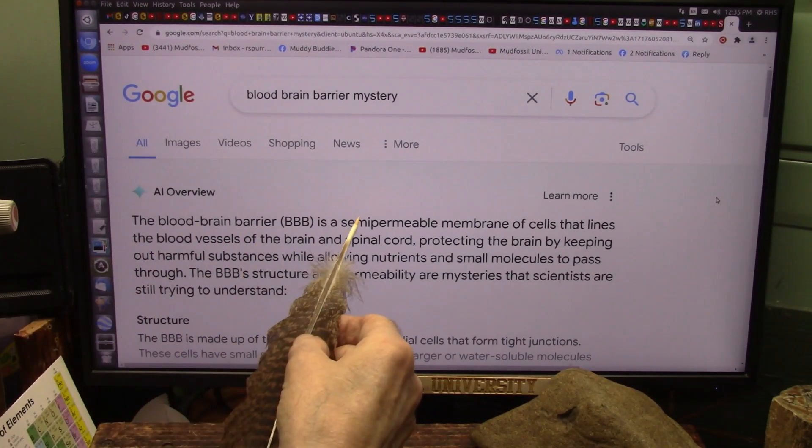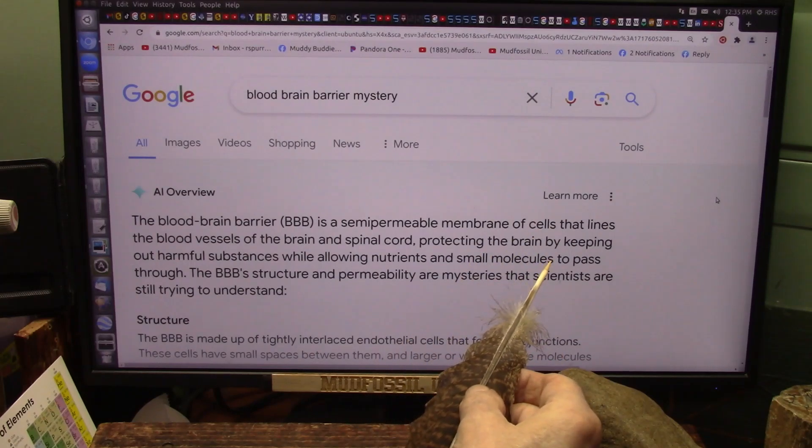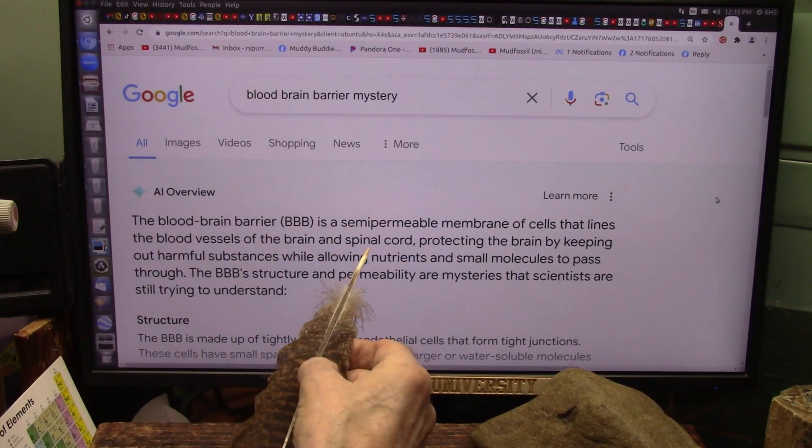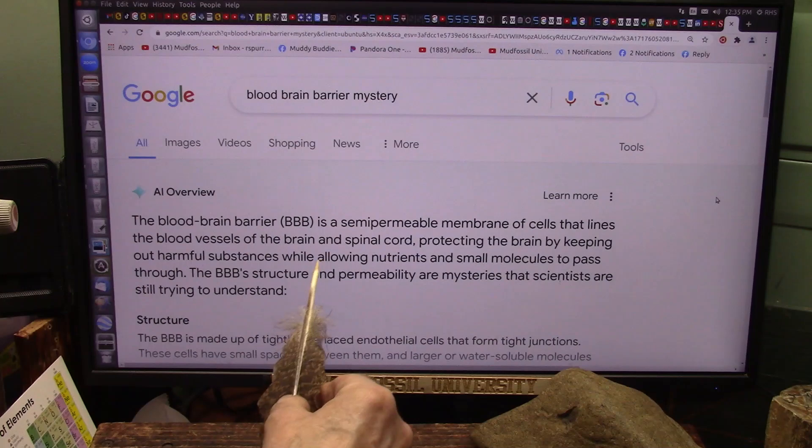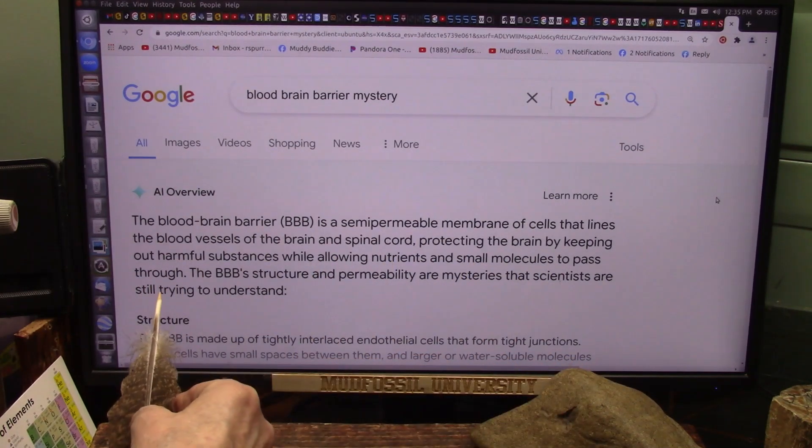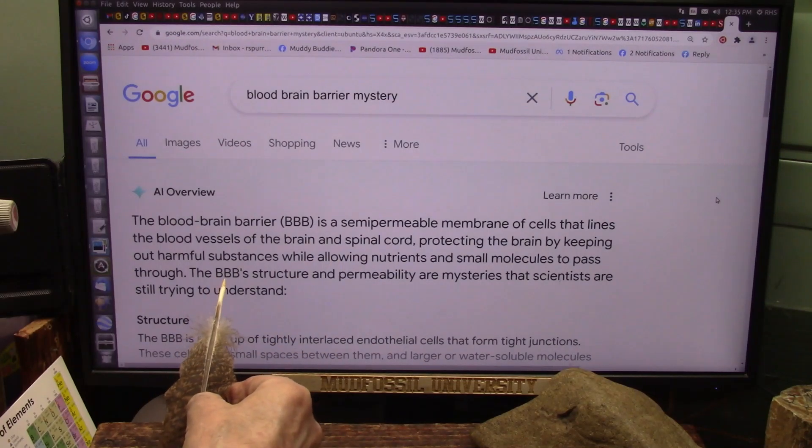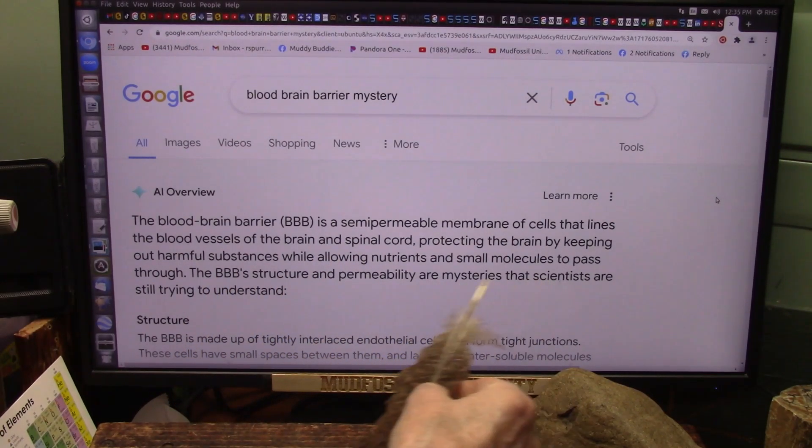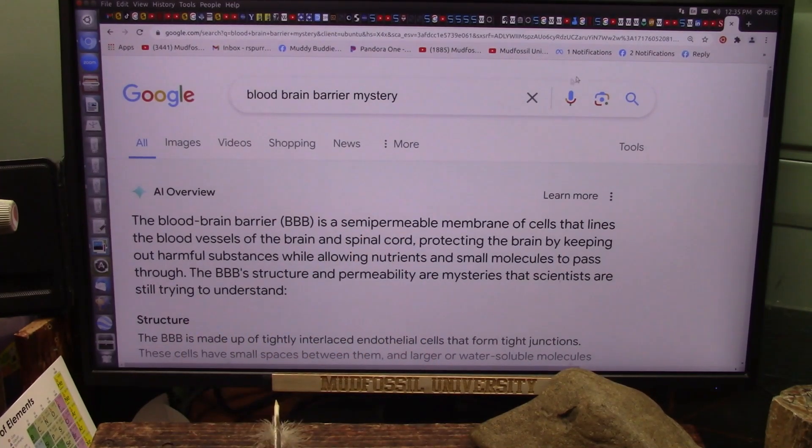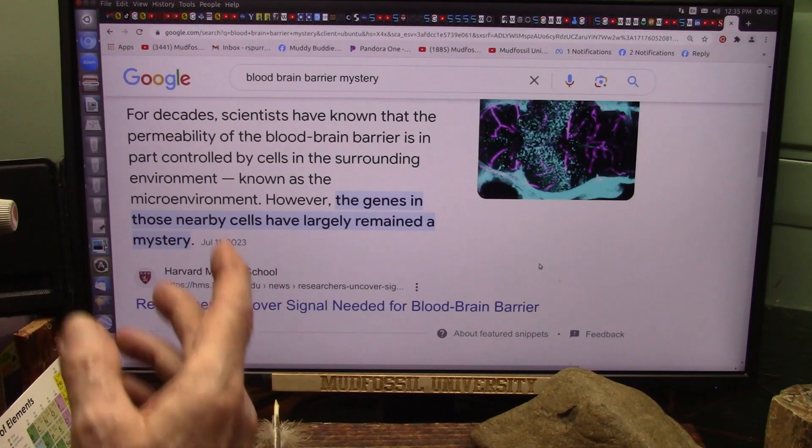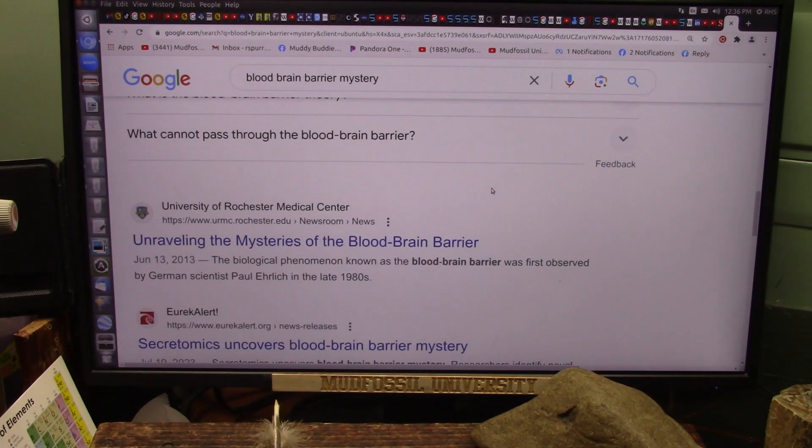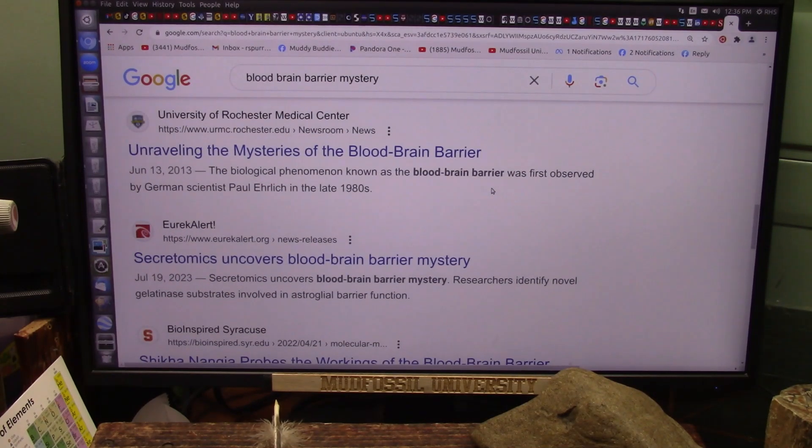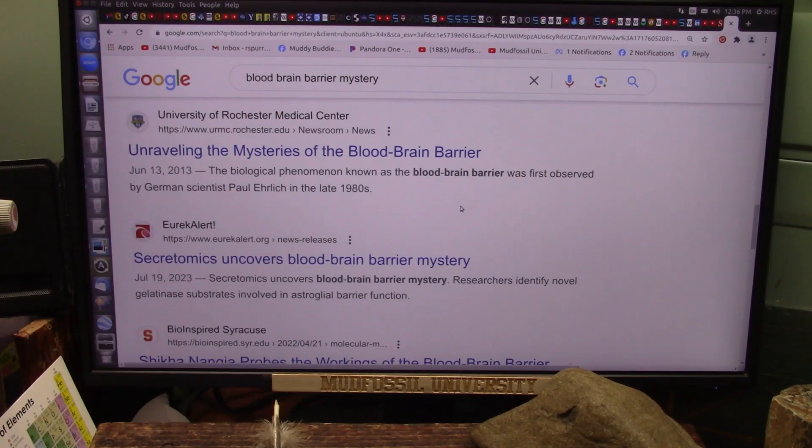This is very simple. The blood-brain barrier is a semi-permeable membrane of cells that lines the blood vessels of the brain and spinal cord, protecting the brain by keeping out harmful substances, only allowing little tiny things in. It allows nutrients and small molecules to pass through, but not enzymes. The blood-brain barrier structure and permeability are mysteries that scientists are still trying to understand. They have no idea how it works. They know it's there, and they're talking about genes and all this stuff, but it remains a mystery.